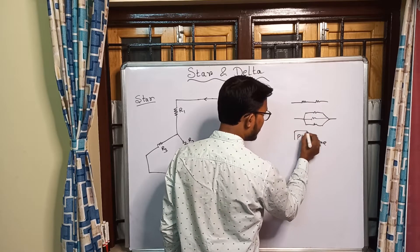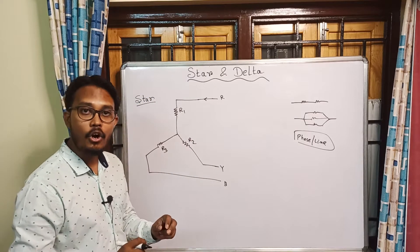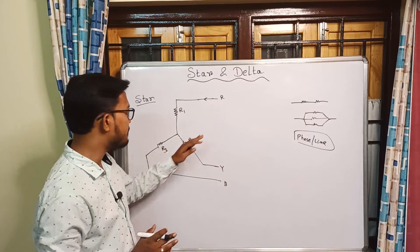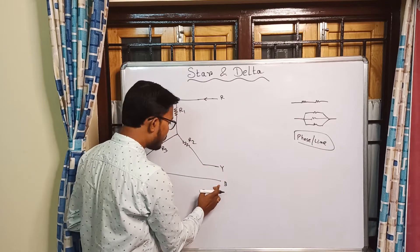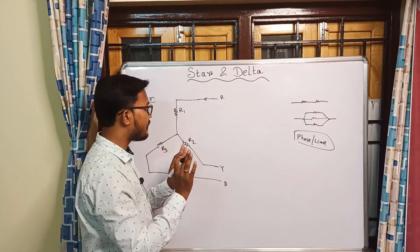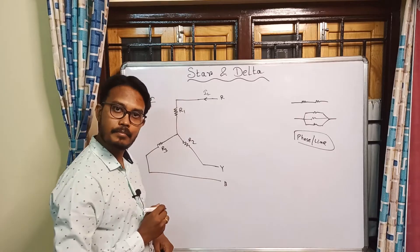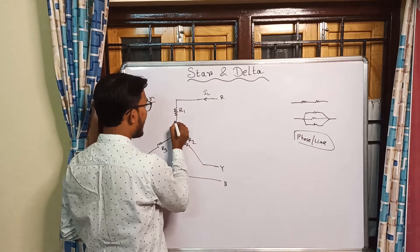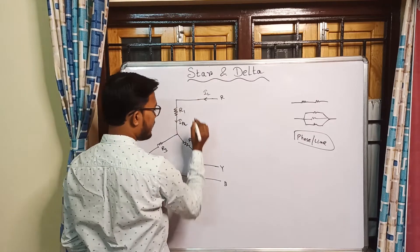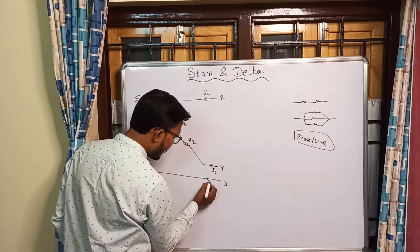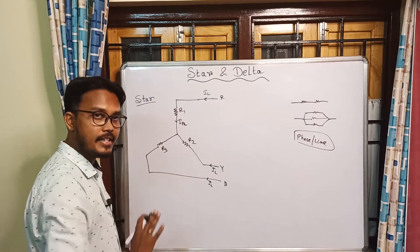The current flowing through a phase is your phase current, and the current flowing through a line is your line current. This is your line, this is another line — so here we have line current and phase current. The current flowing through each phase — for example through R1 — is the phase current, and the current in the line wire is the line current.